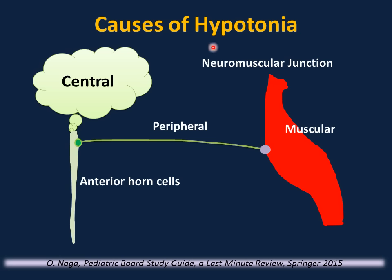Causes of hypotonia and weakness can be organized anatomically: central — the brain and spinal cord — then peripheral, starting from the anterior horn cells, peripheral nerves, and the junction between the muscle and nerve, then the muscle itself. So: brain and spinal cord, anterior horn cells, peripheral nerves, then the neuromuscular junction, and the muscle itself.